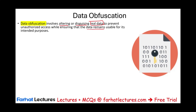How does that work? Simply put, you are using the data, but the data is not clear. When you visually look at it, it's not what it is. It's somehow altered or disguised, but the data is still useful.